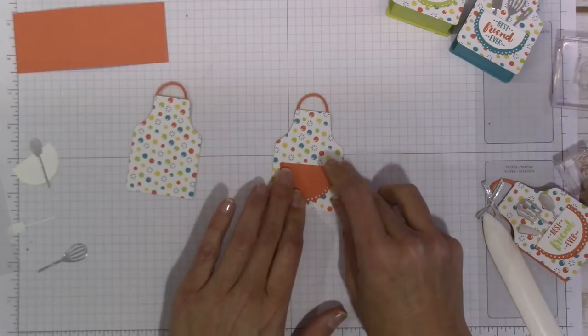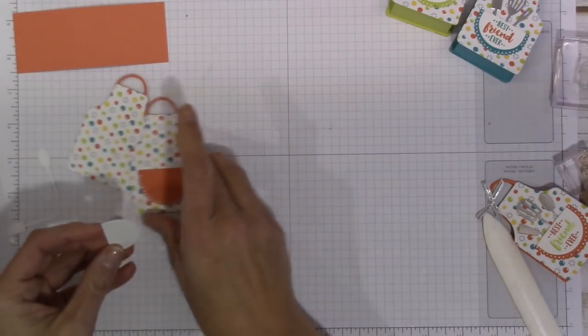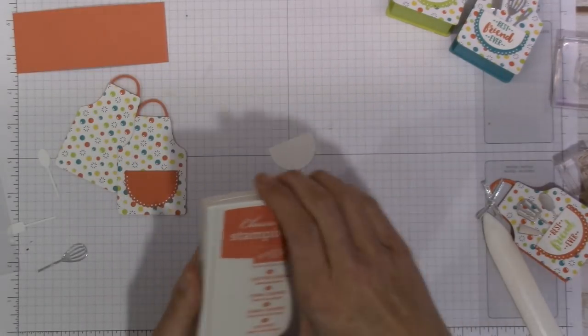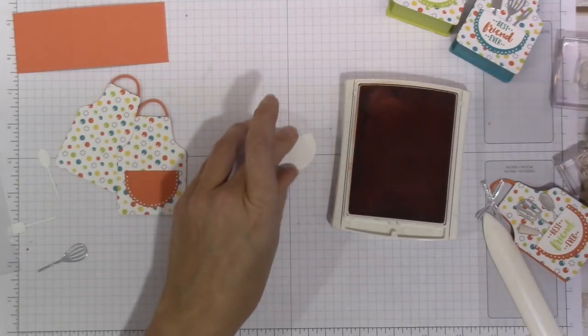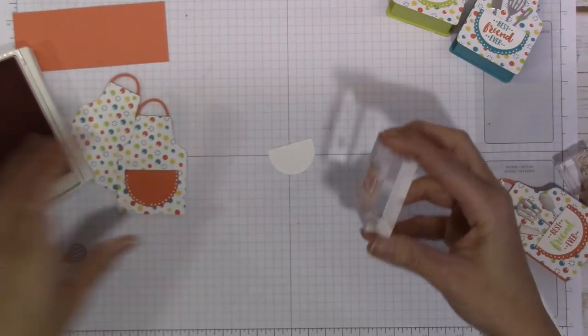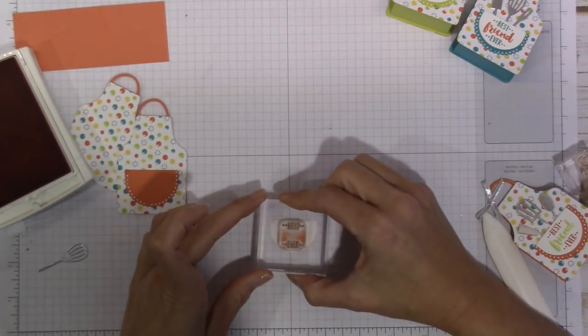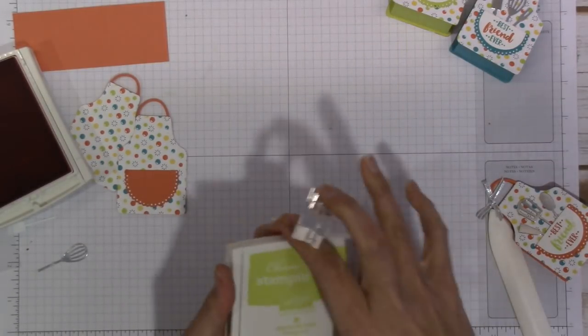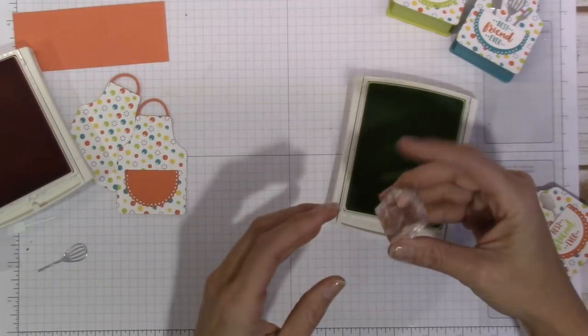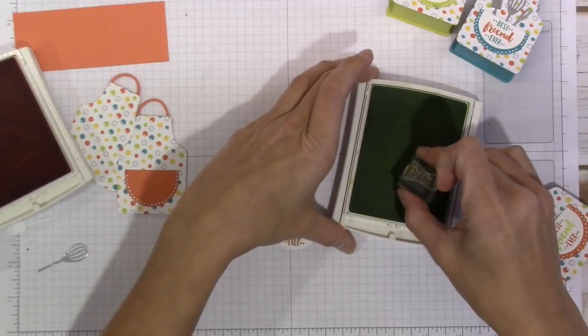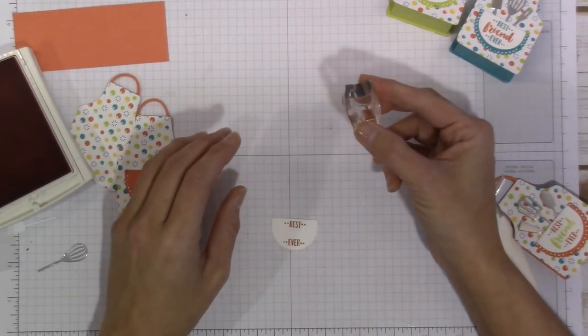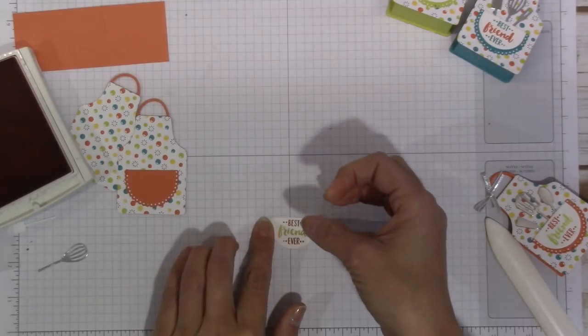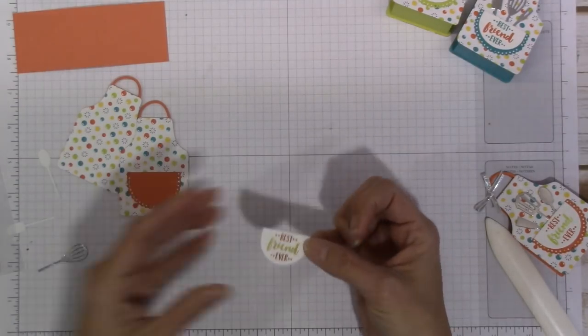And then I'm going to go ahead and stamp our little best friend forever. So our 'best' and 'ever' are going to get stamped out in the Calypso Coral like so, and then our 'friend' is going to get stamped out in the Lemon Lime Twist. And this stamp set also has mom and dad and has other little different sayings that you can certainly use on here as well. So I just chose friend for all three of mine.